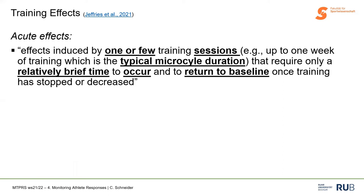We can further separate acute effects. Acute effects are arbitrarily defined here as one of your training sessions and everything up to about a week, which is a typical duration of a microcycle. But there's no clear cutoff for acute or chronic — this is something you have to define in your specific setting. We can look at things that happen in this timeframe after training, and also which require this amount of time to return to baseline. For negative effects like fatigue, we can look at how much time it takes for the recovery process to go from fatigue back to baseline level.